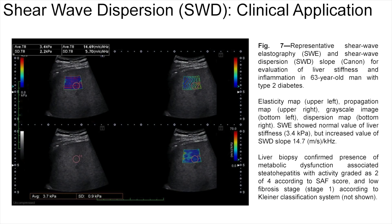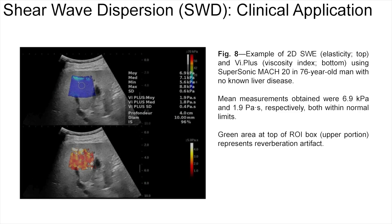In this example, shear wave elastography and shear wave dispersion slope are shown for evolution of liver stiffness and inflammation in a 63-year-old man with type 2 diabetes. On the left is an elasticity map; upper right, a propagation map; bottom left, a grayscale image; and bottom right, a dispersion map. Shear wave elastography showed a normal value of liver stiffness of 3.4 kPa but an increased value of shear wave dispersion slope of 14.7 m/s/kHz. Here is another example from a different manufacturer: in a 76-year-old man with no known liver disease, a mean stiffness of 6.9 kPa on the elasticity map and a viscosity of 1.9 kPa on the viscosity map, both within normal limits.